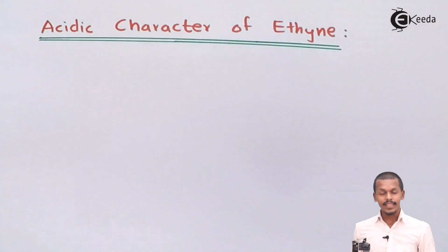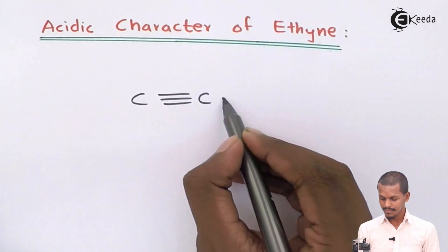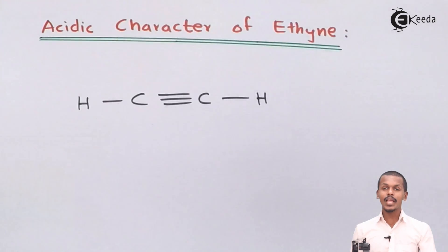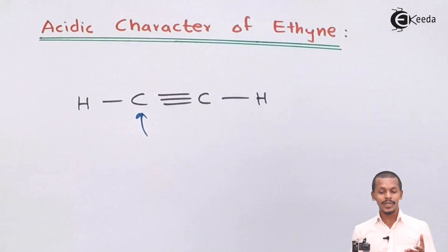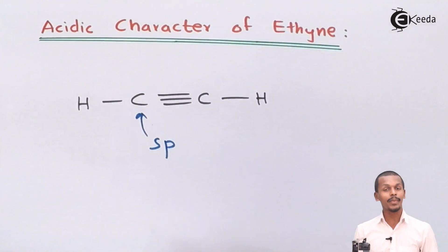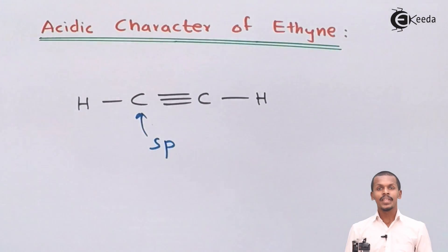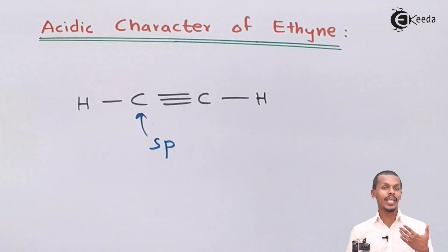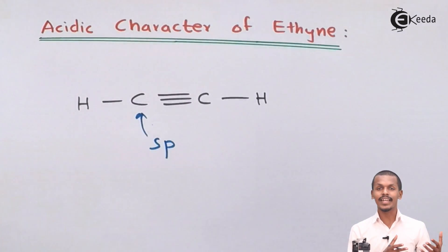Ethyne can be represented in this manner. When we see about the hybridization of the carbon atom, in this case the carbon is exhibiting SP hybridization. Similarly, ethane consists of carbon atoms that show SP3 hybridization, while SP2 hybridization is shown by the carbon atoms of ethene.